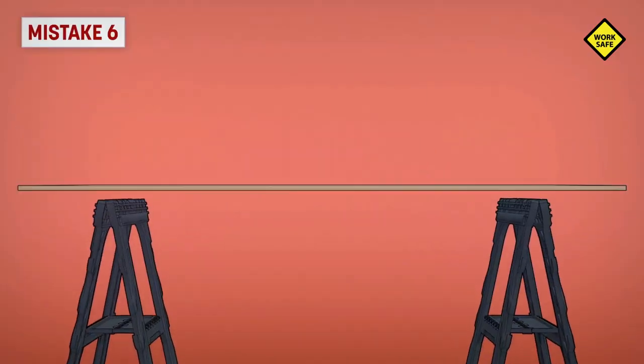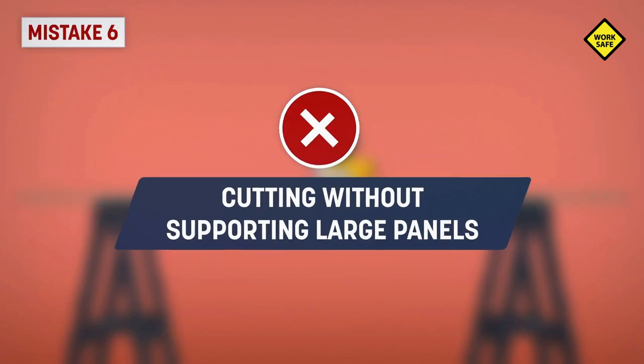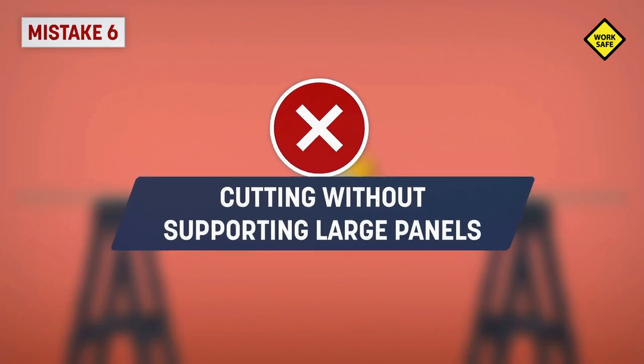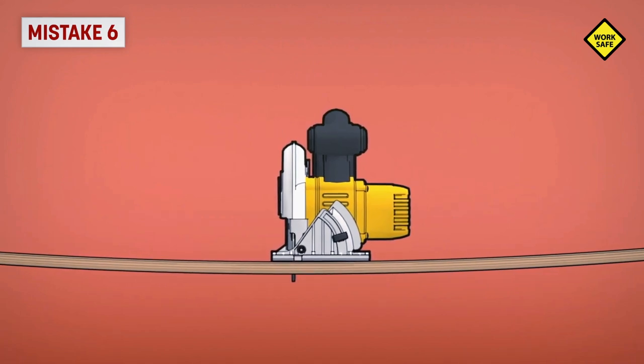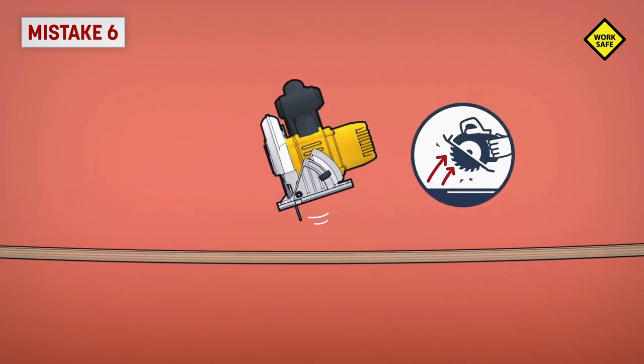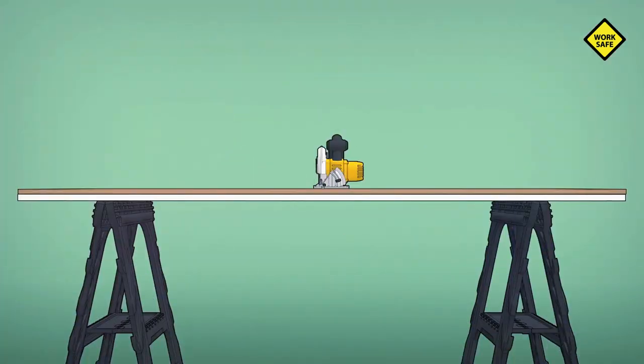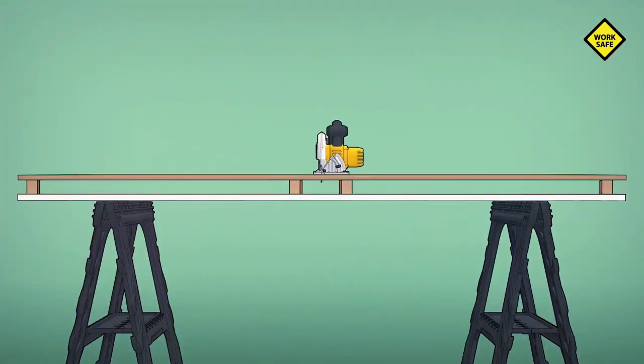Mistake 6: Cutting without supporting large panels. Without adequate support, the kerf will close down and pinch the blade, causing binding and kickback. You need to place small pieces of wood on either side of the cut and at both ends to properly support the workpiece.